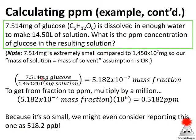Now let's get to our fractions: milligrams of glucose divided by milligrams of solution gives a mass fraction. To get to parts per million — because this is such a small number, that's really what parts per million is for — take that mass fraction and multiply it by a million. I end up with 0.5182 parts per million instead of 5.182 × 10⁻⁷ as a mass fraction. In this case, that might be small enough to consider going to parts per billion.